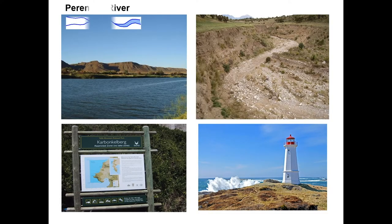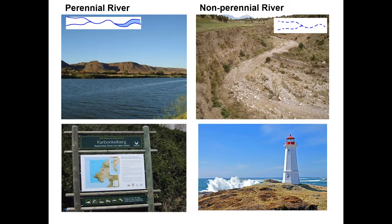Over here we have a perennial river as well as our non-perennial river. Very easy to distinguish between the two on a map. A perennial river has water flowing right through the year — therefore no break in the river line on your map. A non-perennial river only flows during seasonal times, therefore you will have a broken blue line on your maps.